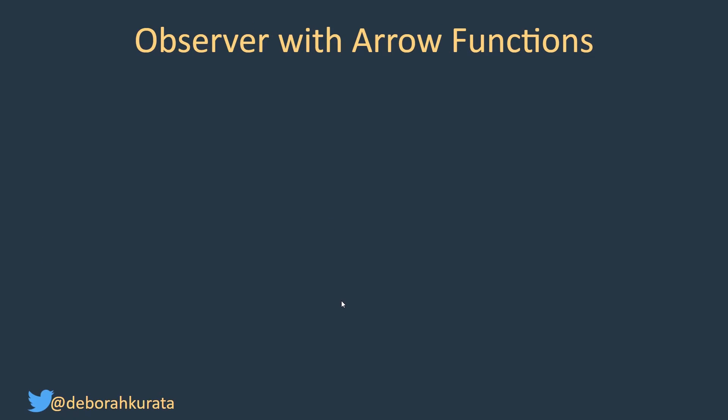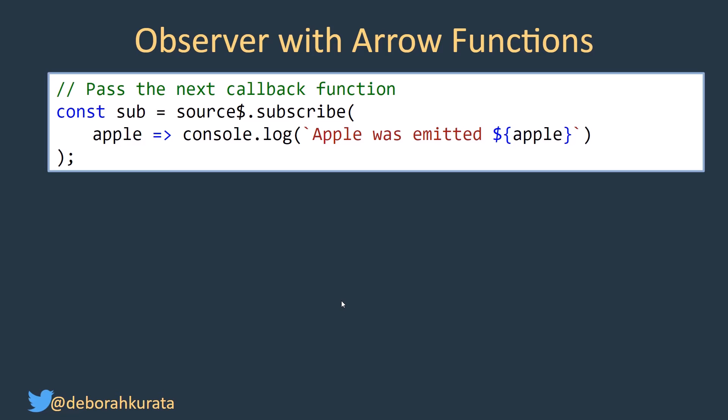But as I said, this is uncommon. What do we do instead? We do our observer with an arrow function. So here is our subscribe, and directly in our subscribe is where we have our next function. We receive our next item, which is an apple, and we log it.